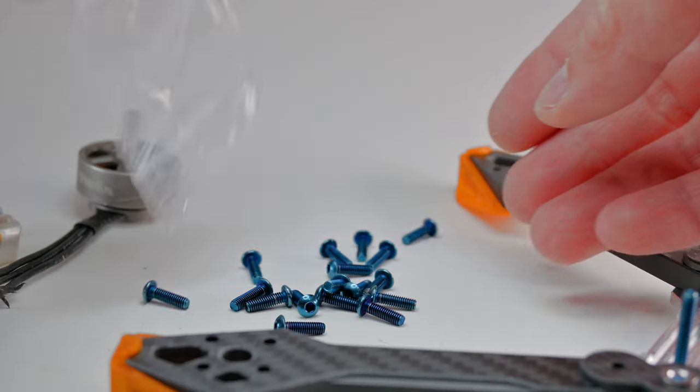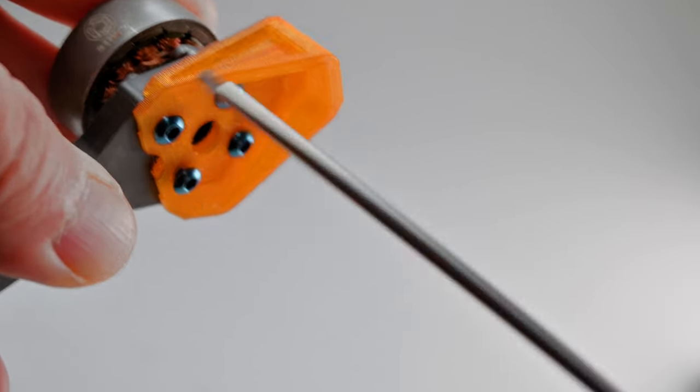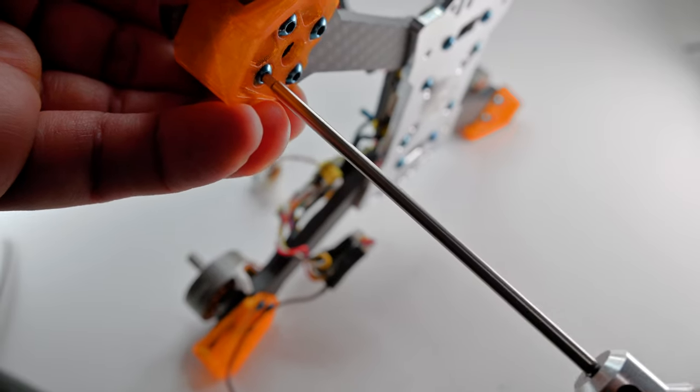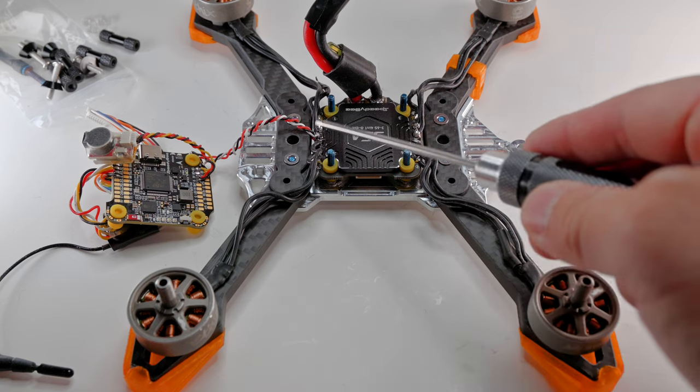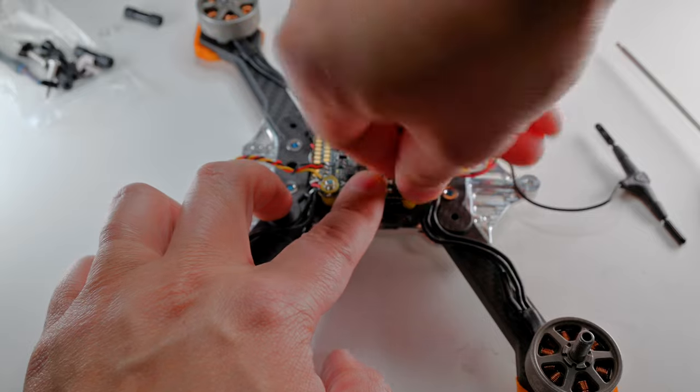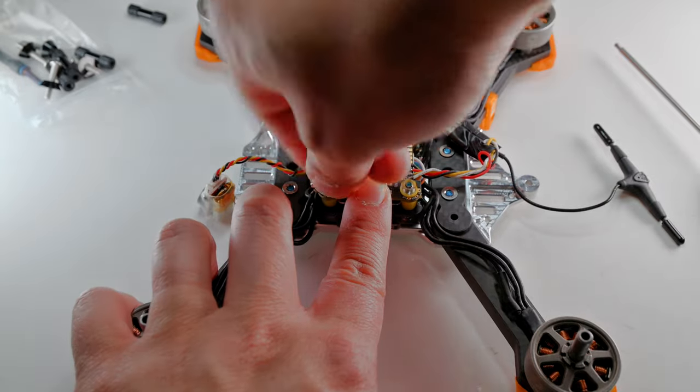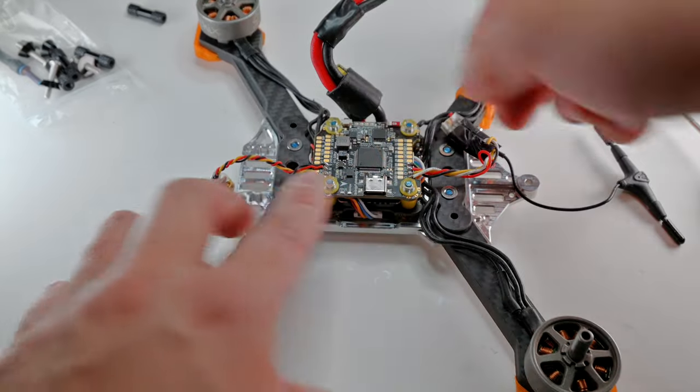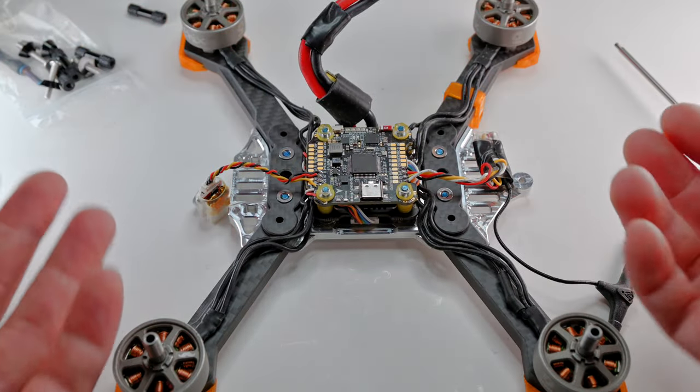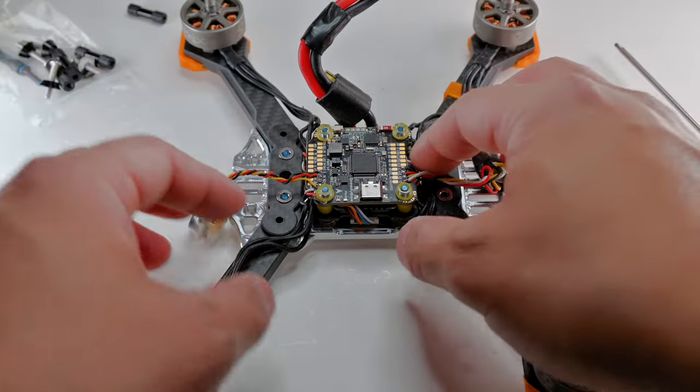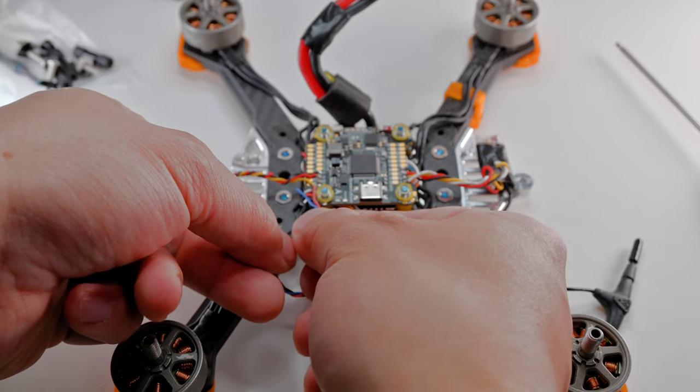So take your M3 by 10 screws and screw in all your motors. So now is the time to solder all your motor wires and your XT60 pigtail and cap. And once that's done, install your M3 nuts onto your FC. So finally, you can solder on your buzzer, your receiver, and don't forget to solder your LED light as well.